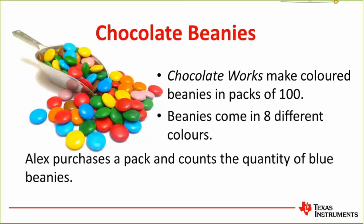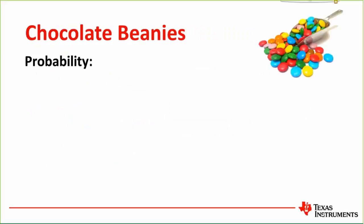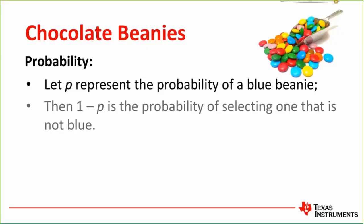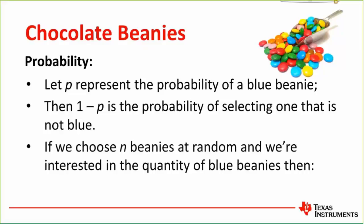For those doing the math, it won't be exactly one-eighth in each case. Alex purchases a pack and counts the quantity of blue ones. Thinking about what students have already covered — probability — let's look at this as a binomial probability. If p represents the probability of a blue beanie in his bag of 100, then 1 minus p is the probability of not getting a blue one. If we choose n beanies at random, the quantity of blue beanies is binomially distributed.